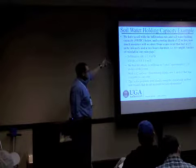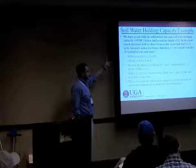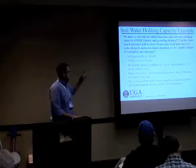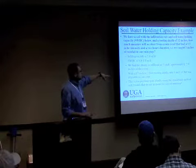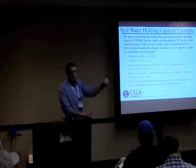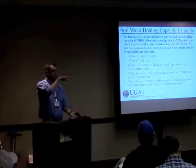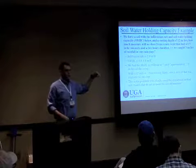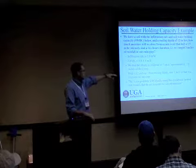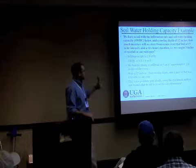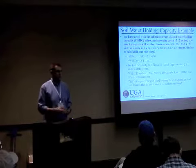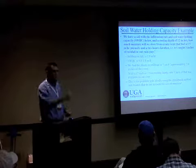Say we had a summer thunderstorm with a 1.5 inch per hour intensity that lasted two hours — meaning we catch three inches in the rain gauge. How much of that is actually effective? With an infiltration rate of 1 inch per hour over two hours, we can only get two inches in, so we've immediately lost an inch. Then with a 12-inch rooting depth holding 1 inch per foot, we can only hold one inch of water total. So out of three inches of rain, only about one inch is effective for the crop.